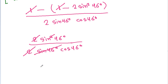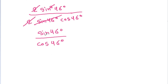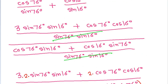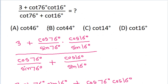It is sin 46 degree by cos 46 degree, and sin by cos is tan 46 degree. And tan 46 degree — since 46 equals 90 minus 44 — and tan(90 minus theta) is cot theta, so it will be equal to cot 44 degree. So the correct option is option B.